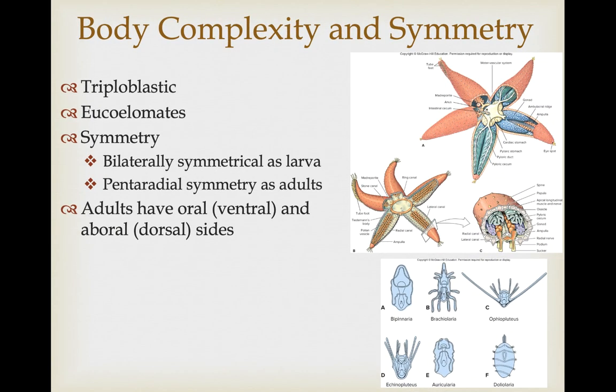Echinoderms are triploblastic eucoelomates. All the groups we've been covering have been this way for a while, and for the most part we've been talking about bilaterally symmetrical animals. The echinoderms as larvae are bilaterally symmetrical, but they show pentaradial symmetry as adults. There is no cephalization. Adults have an oral side, usually referred to as the ventral side, and an aboral dorsal side, so the mouth is usually facing down.